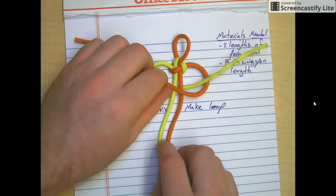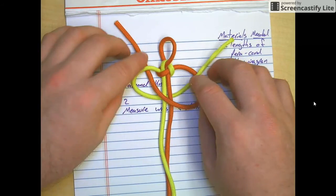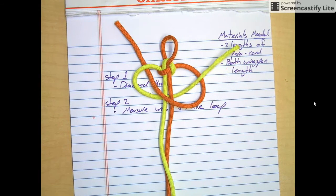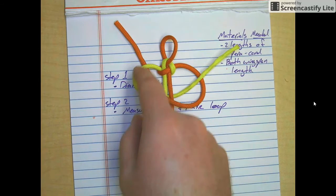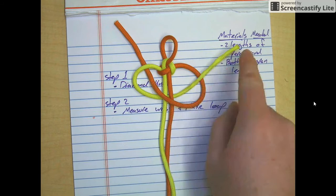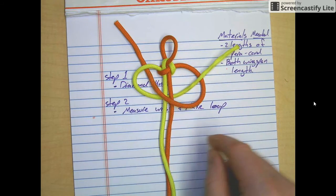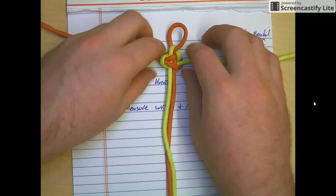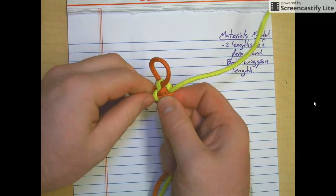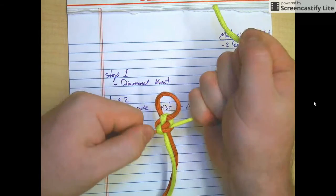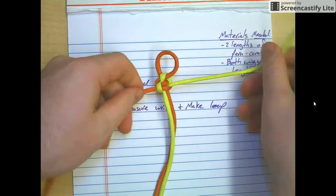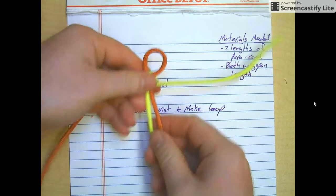Each time it should look something very similar to this. As you follow the yellow, it goes over or goes under and up through. This one goes under and down through. And each time you want to pull it very tight. You can work it up with your fingers a bit, and then you cinch it down with your wrists. And that's pretty much the process.